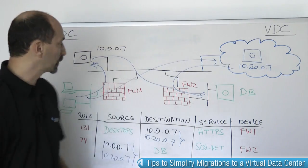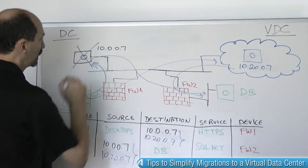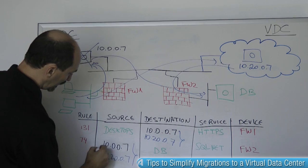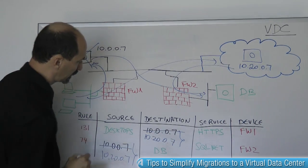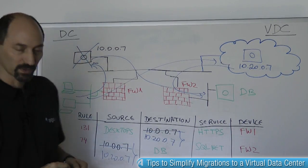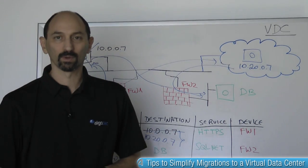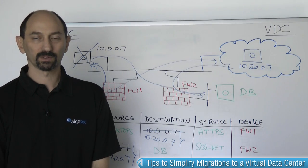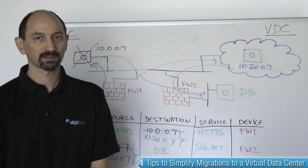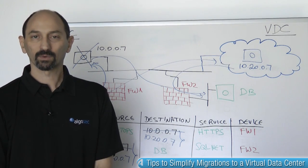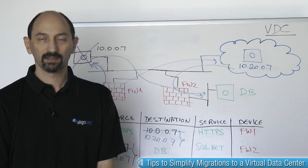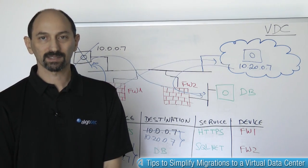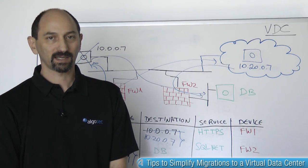Once that's done, we can decommission the old server and eliminate all references to the old IP addresses from the firewall rules. That's it for today. Thank you for your attention and see you next time in the next class.